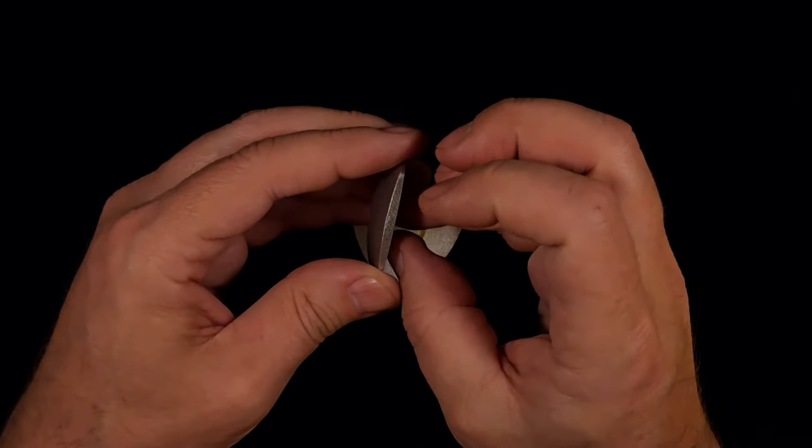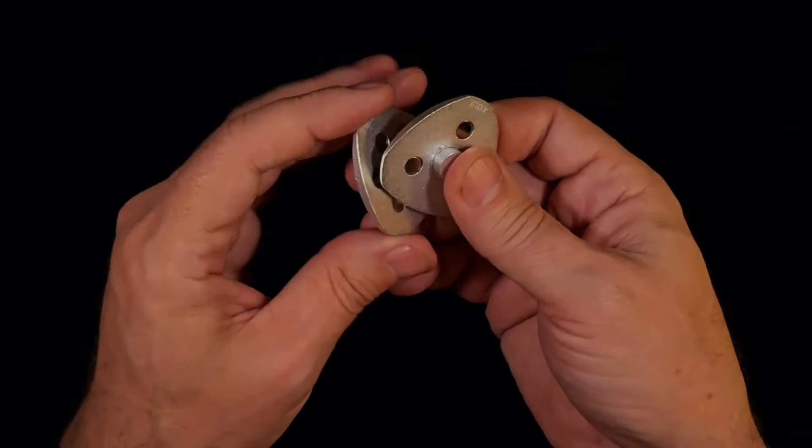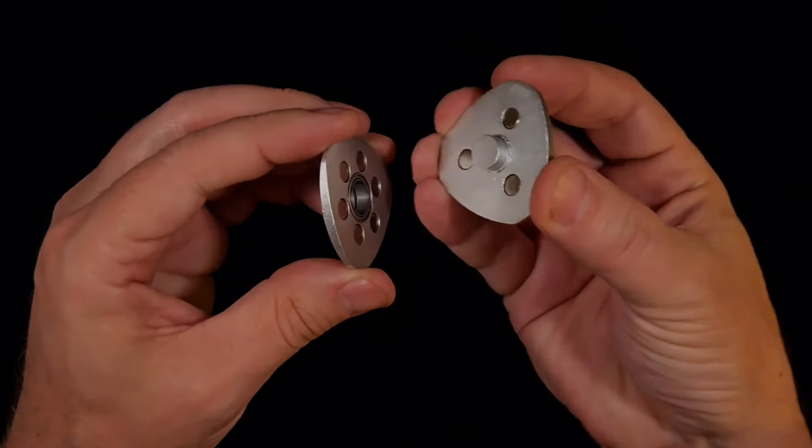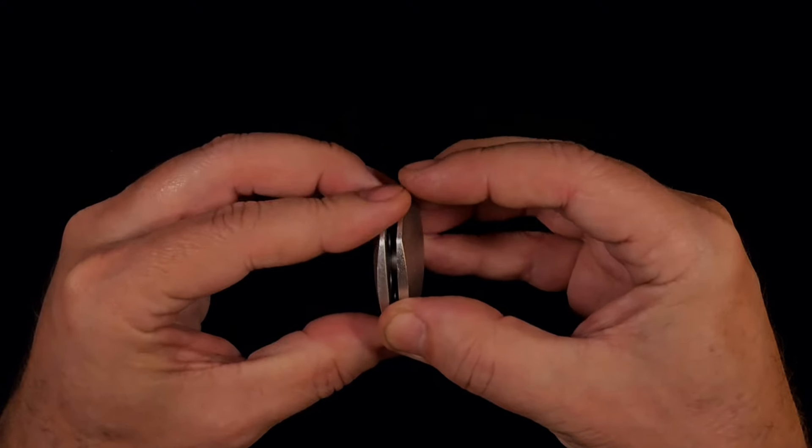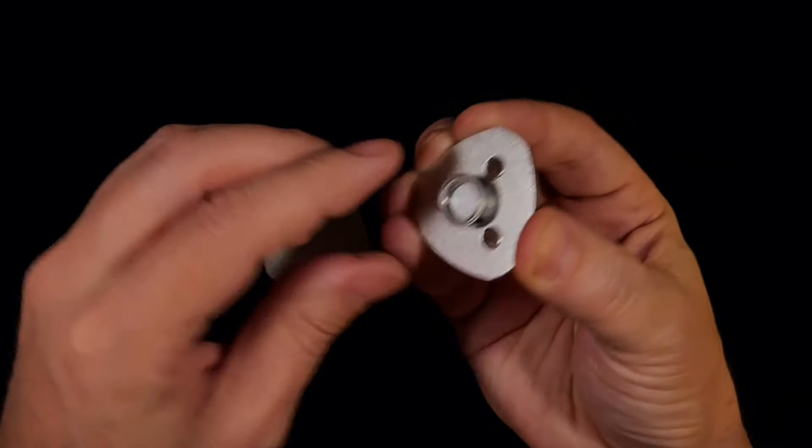And there's the bearing. To get the bearing out, I'm just going to use the stem from this and cock it in there sideways a little bit. And that pulls it right out.